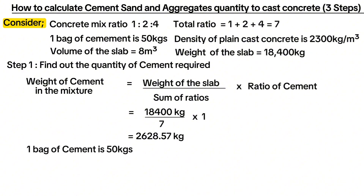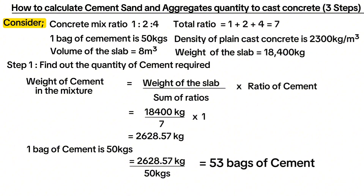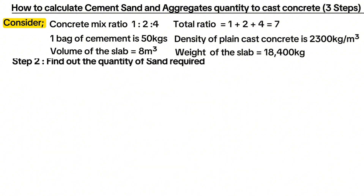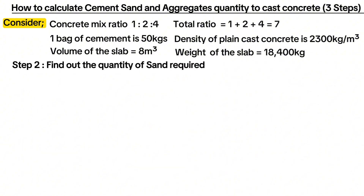One bag of cement is 50 kilograms. Therefore, when we divide the weight of cement in the whole mixture by the weight of one bag of cement, we get 53 bags of cement.